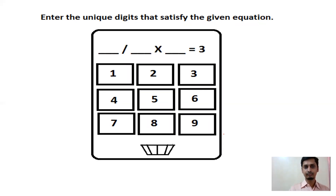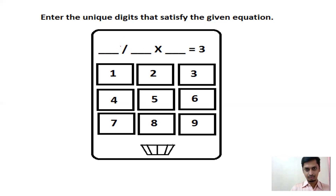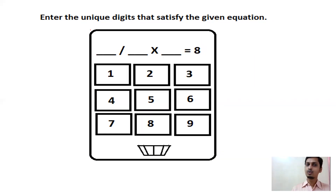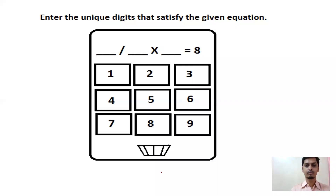Next: dash ÷ dash × dash = 3. You can choose 1 ÷ 3 × 9 = 3, for example, as long as all values are single digits. Then: dash ÷ dash × dash = 8. Pause and try it yourself. The answer: 6 ÷ 3 = 2, then 2 × 4 = 8. So 6, 3, 4 fills the dashes. Note you can't reuse the same digit, so 4 ÷ 2 × 4 is not valid.